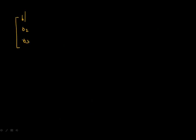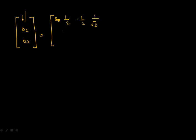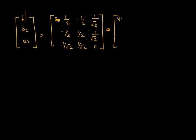The scattering matrix of the H-plane T is: [1/2, -1/2, 1/√2; -1/2, 1/2, 1/√2; 1/√2, 1/√2, 0]. The inputs are: A1 = 32 milliwatts, A2 = 0, A3 = 0.